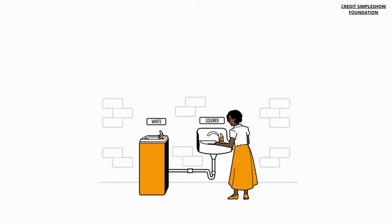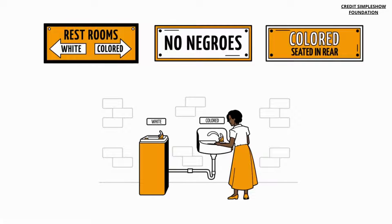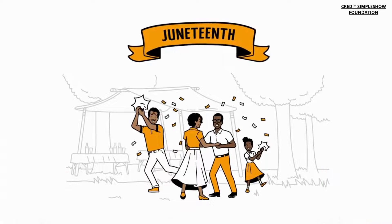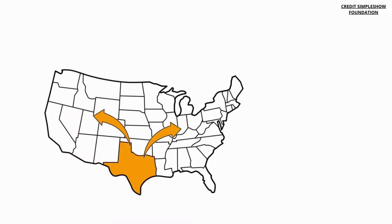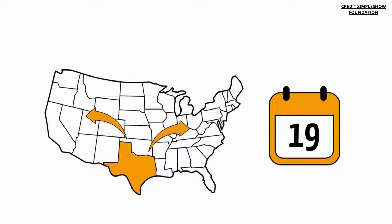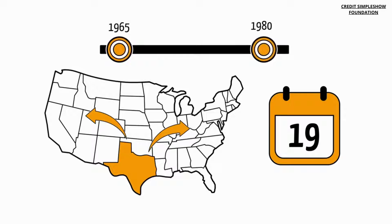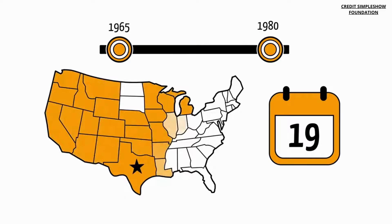Even though African Americans did not receive the same liberties as others, they and their descendants continued the celebration every year. And as they migrated from Texas to other parts of the country, the Juneteenth tradition spread. Within a few years, it became an annual tradition in many states. Finally, in 1980, Texas declared Juneteenth a state holiday, with 46 more states soon to follow their lead.